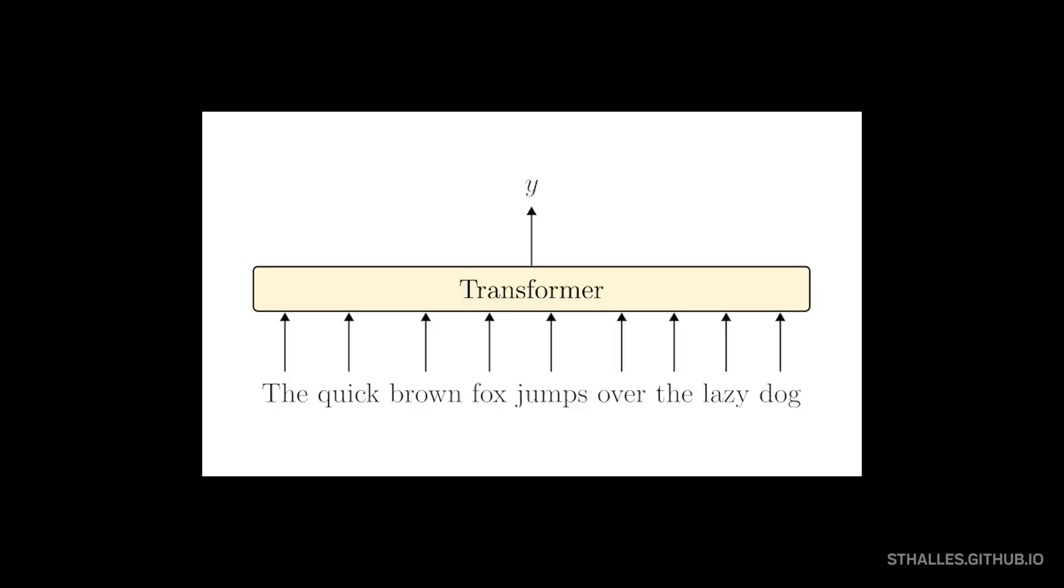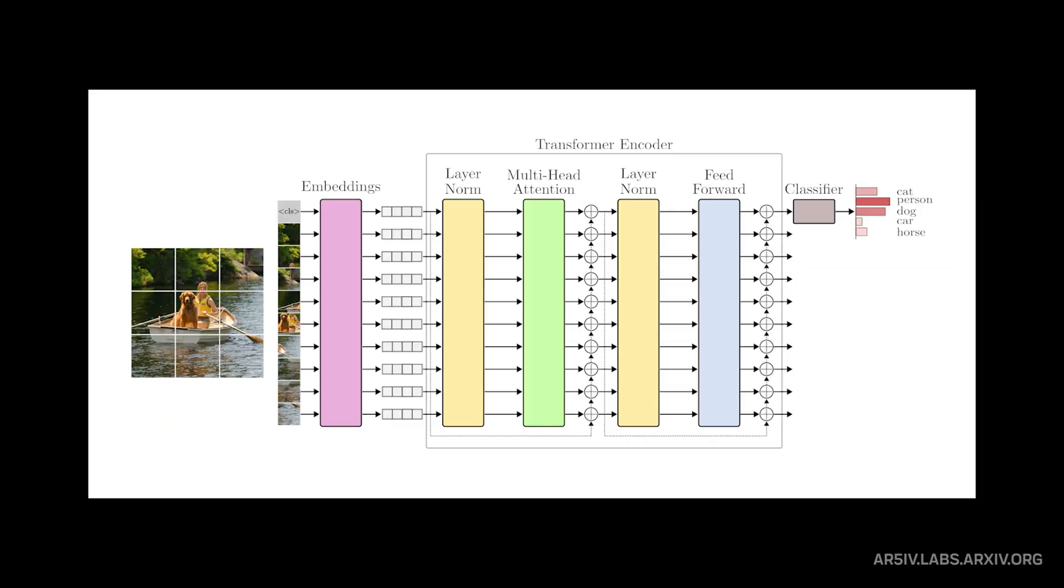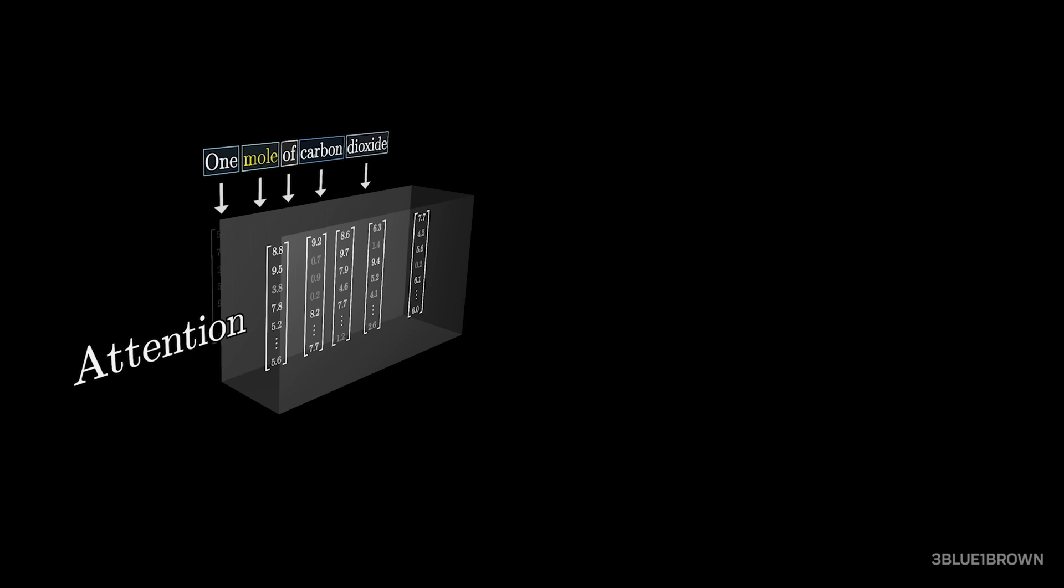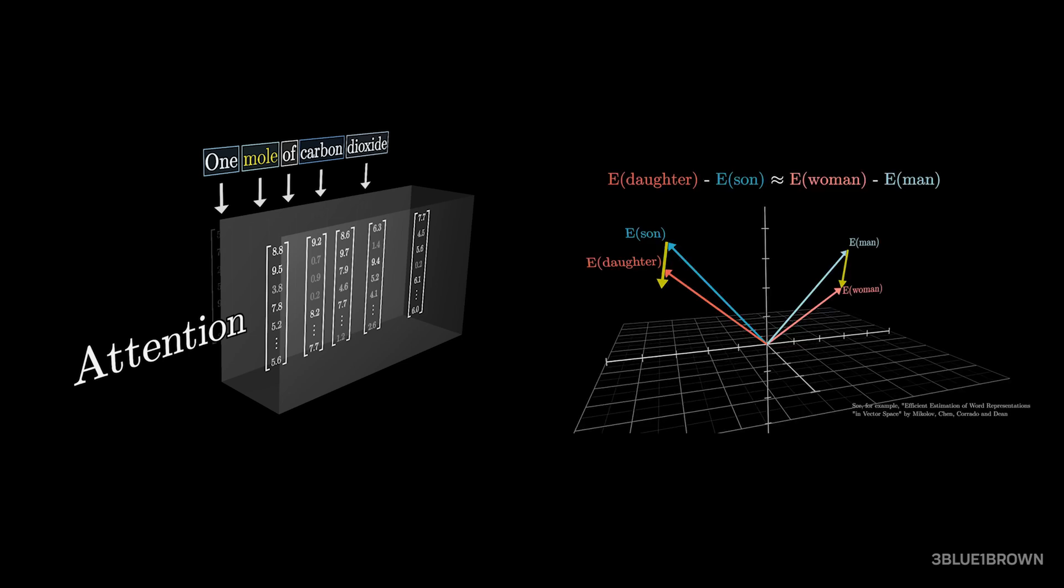The transform in transformer comes from how they transform sequences of tokens—chunks of text, image patches, or any other data—into high-dimensional vectors and back again. These vectors capture the meaning and relationships in your data in a way machines can process.